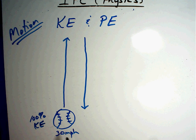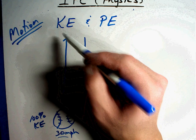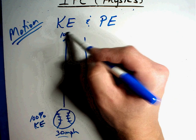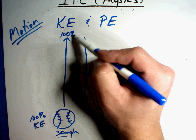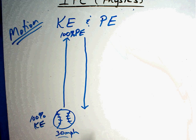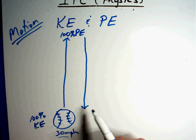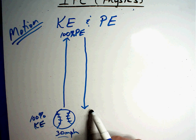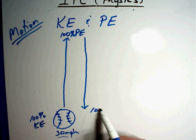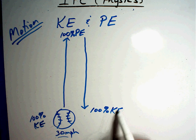As that ball goes up, when it gets to the very top it's going to stop for a second. By definition, it has 100% potential energy at the top. Then it starts falling. When it falls, it's going to be at its fastest speed right before I catch it again — meaning it's at 100% kinetic energy again.